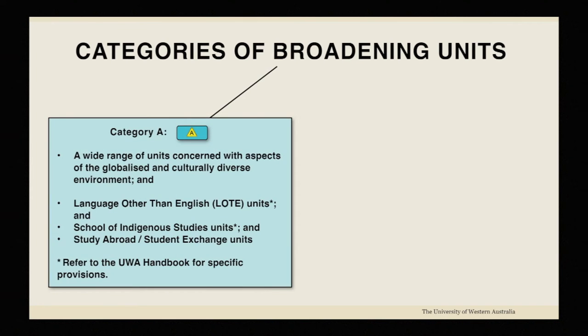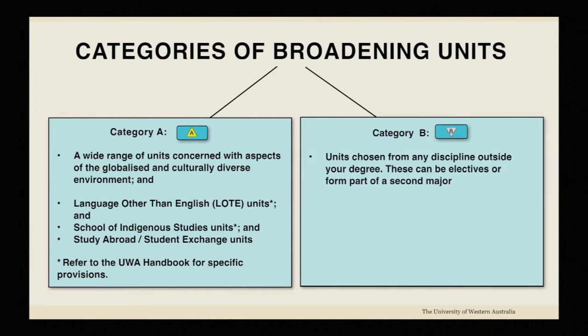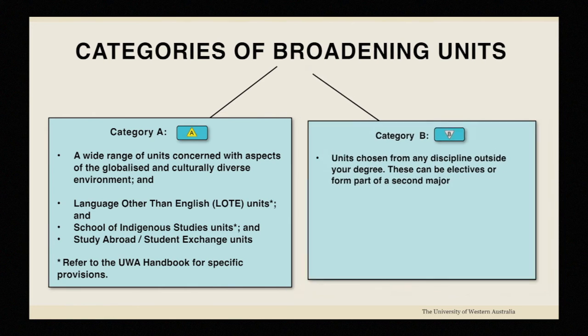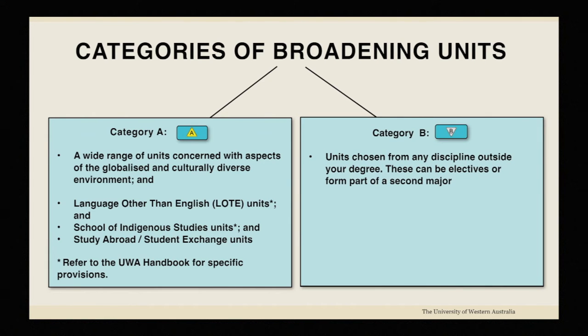There are two types of broadening units, those that belong to category A and those in category B. Category A units have a global spin and will prepare you for a culturally diverse environment. Category B units are chosen from outside your degree. These will expand your knowledge to include other fields.